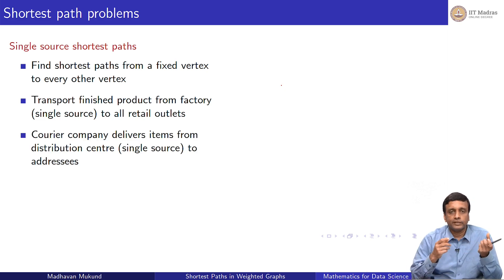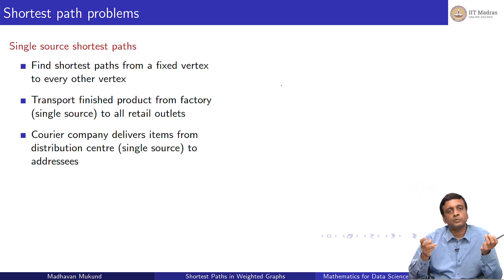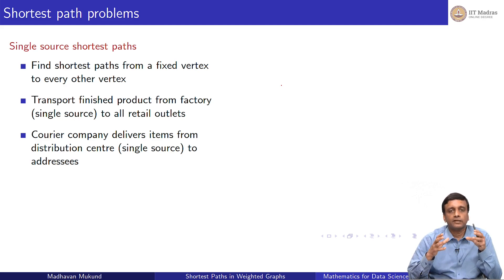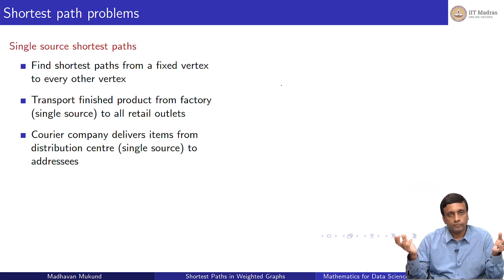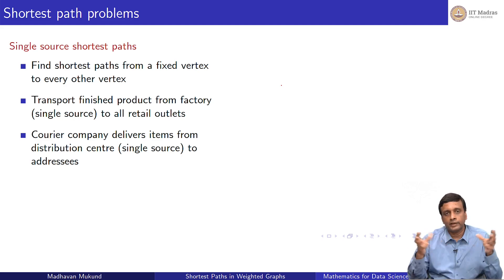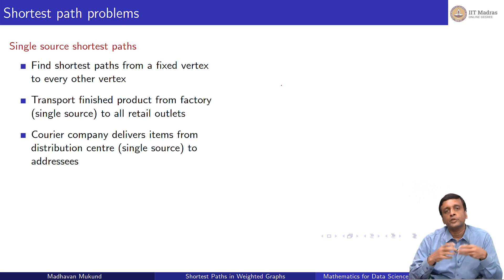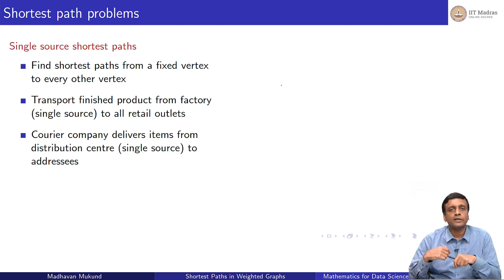Alternatively, consider a courier company. Flights between cities bring all packages to, say, Delhi, where they go to a centralized clearing facility. Overnight, flights arrive from Calcutta, Bombay, Bangalore, and Chennai. All these packages arrive and now must be delivered. The distribution center is a single source, and the company must find the most efficient way to distribute packages to all destinations. The single source shortest path problem has many such applications and is therefore an interesting version to solve.